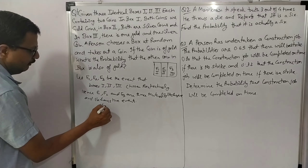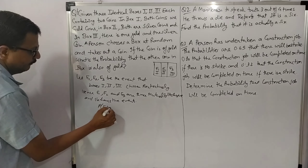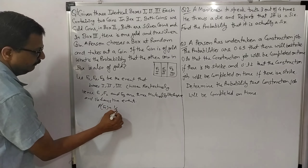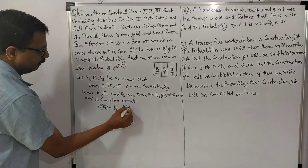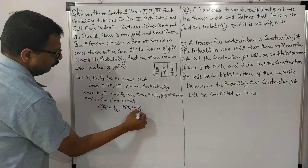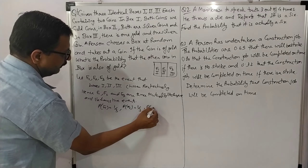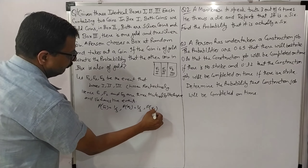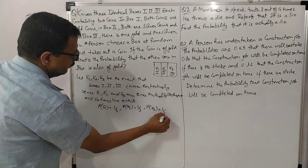P(E1) = 1/3, P(E2) = 1/3, P(E3) = 1/3, since each box is equally likely to be chosen.